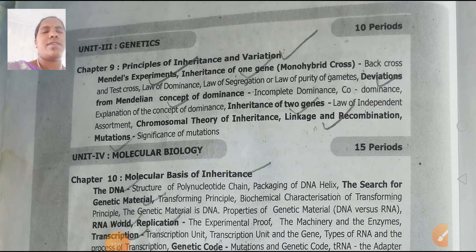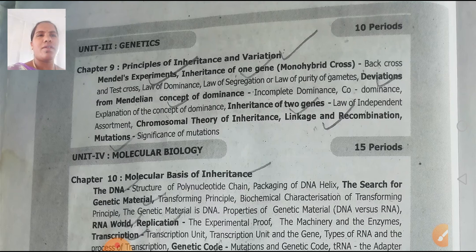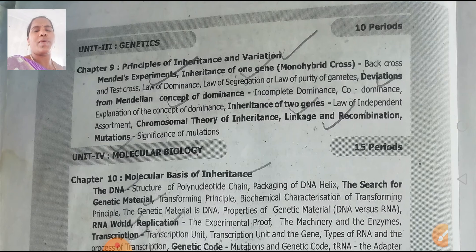Unit 3 is Genetics — Genu Shastra. This unit has only Chapter 9: Principles of Inheritance and Variations, which includes inheritance of one gene, deviations from Mendelian concept of dominance, inheritance of two genes, chromosomal theory of inheritance, linkage and recombination, and mutations. Genetics is a very important topic — all side headings have content, and the entire unit is covered.